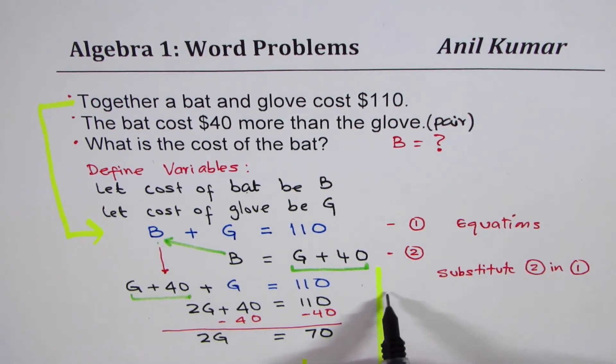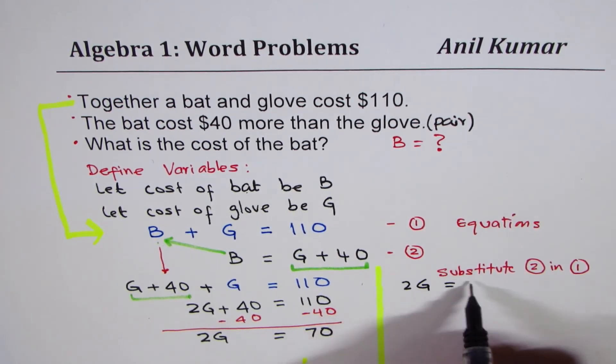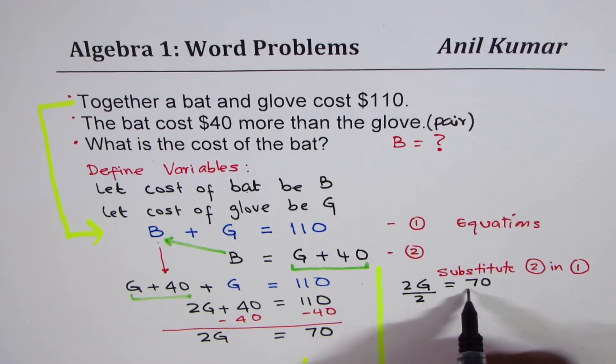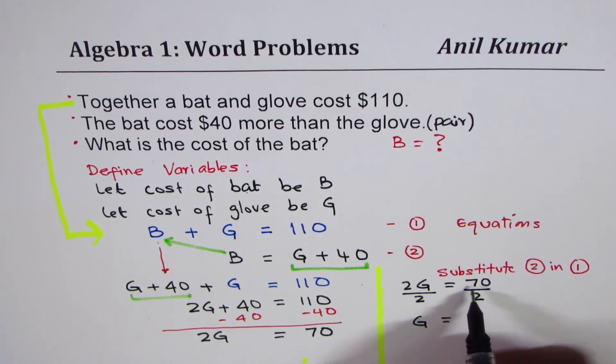So, we have two gloves will cost $70. We could divide both sides by two, and then we get cost of the glove is half of 70, which is 35. Of course, in dollars.